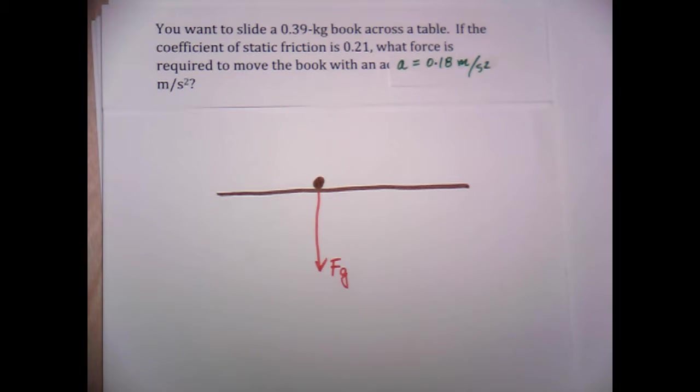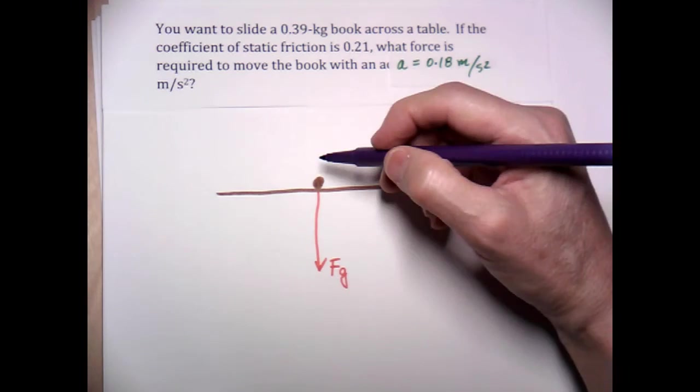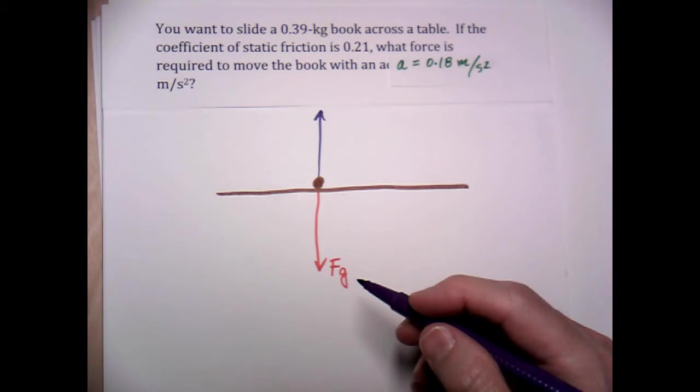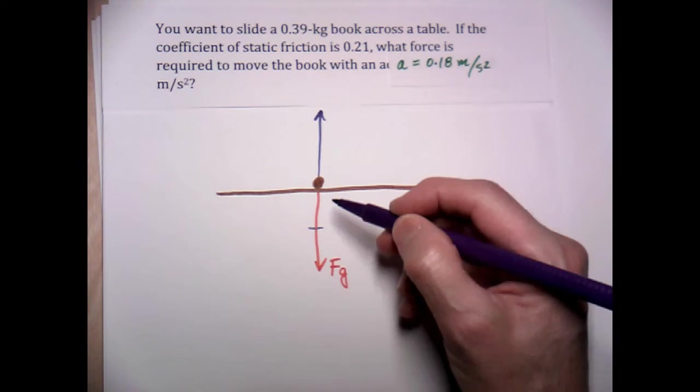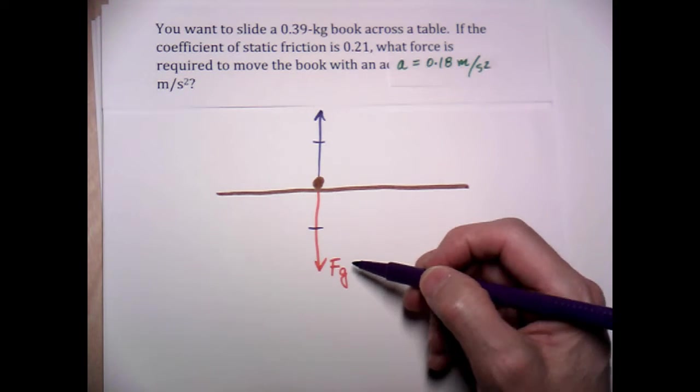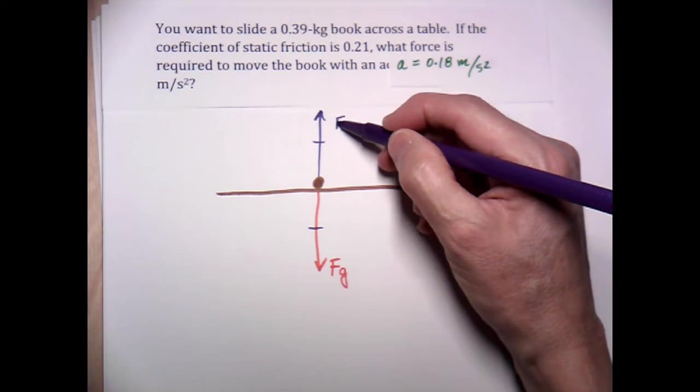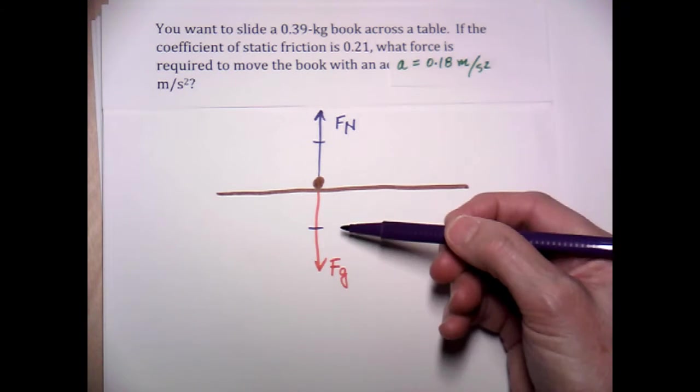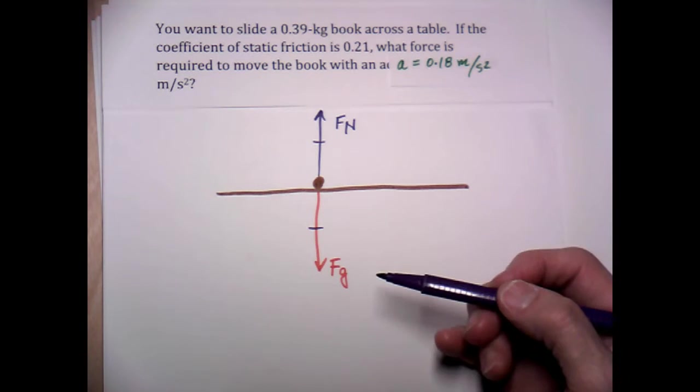The next question: is it sitting on a surface? Well, yes, it is. We just said that it was sitting on a table. So I'll draw an up arrow pointing in the opposite direction and of equal length as the force due to gravity because we know that this book is not accelerating in this direction. It's accelerating in this direction across the table.